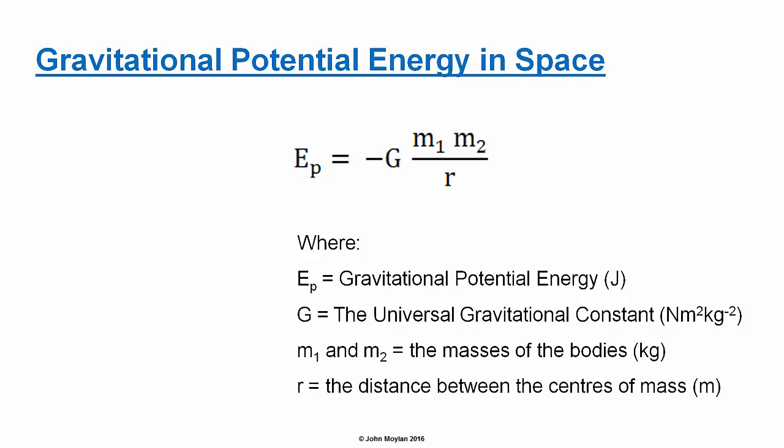For a body in space, or two bodies separated by a long distance, gravitational potential energy E subscript P can be calculated using the formula: E subscript P equals minus capital G, M1, M2, divided by R, where G is the universal gravitational constant, M1 and M2 are the masses of the two bodies in kilograms, and R is the distance between the centers of the two bodies in meters.